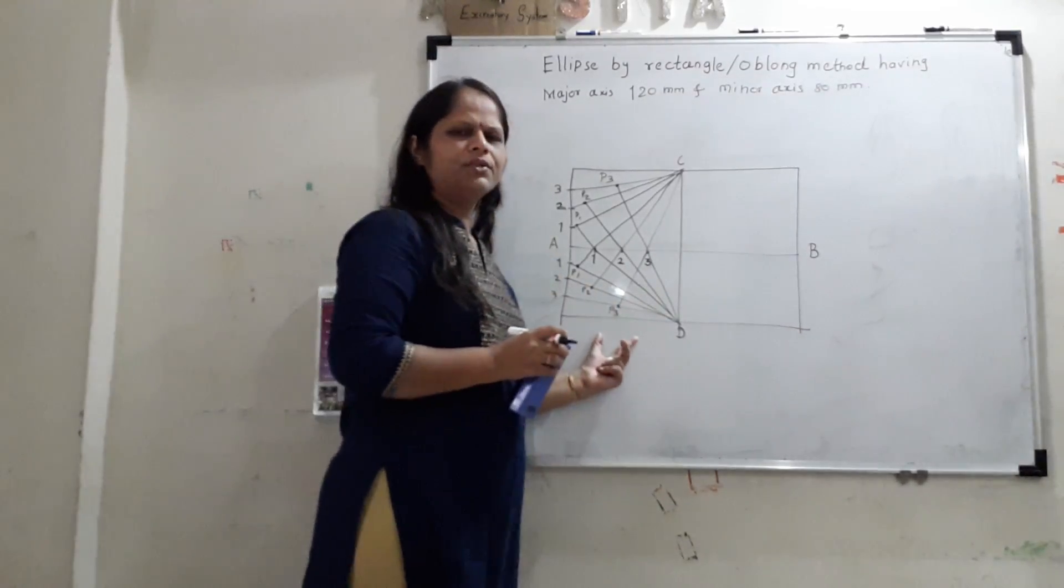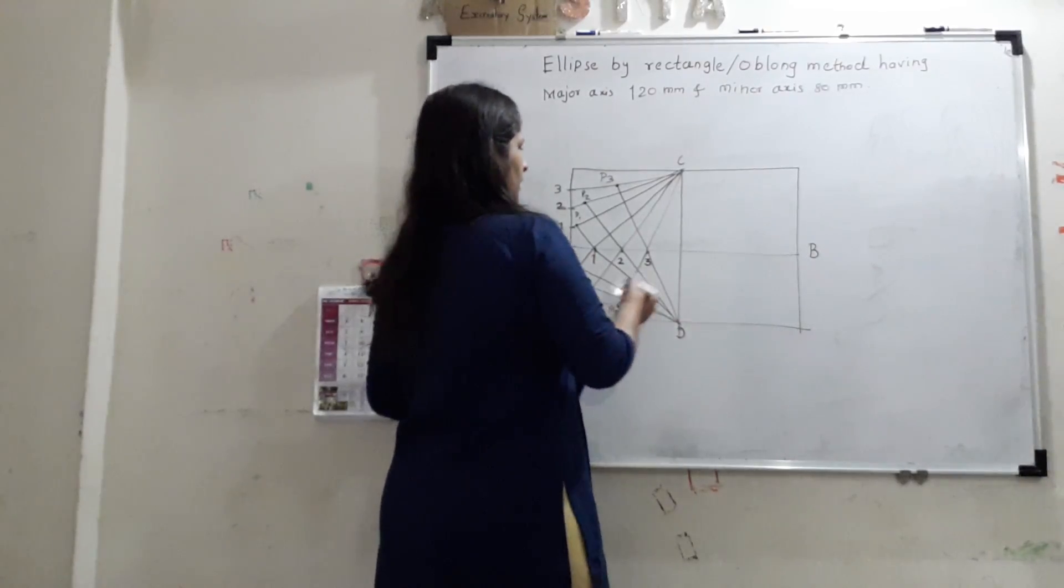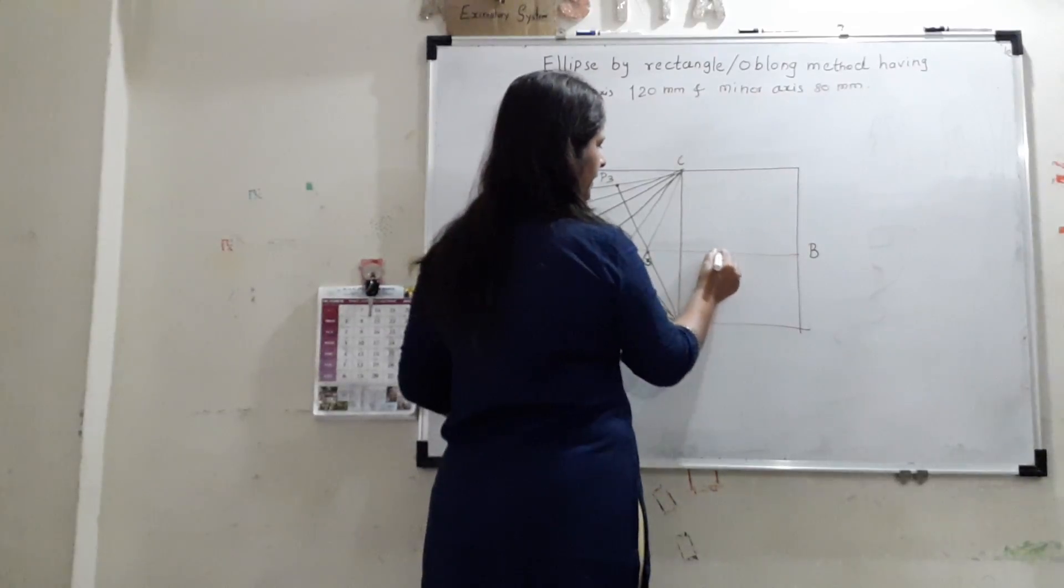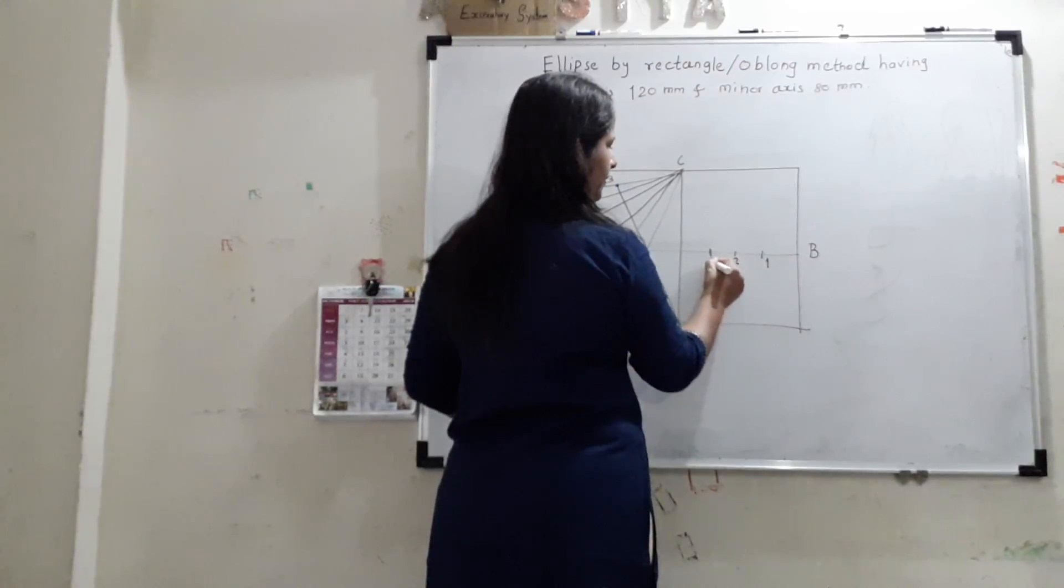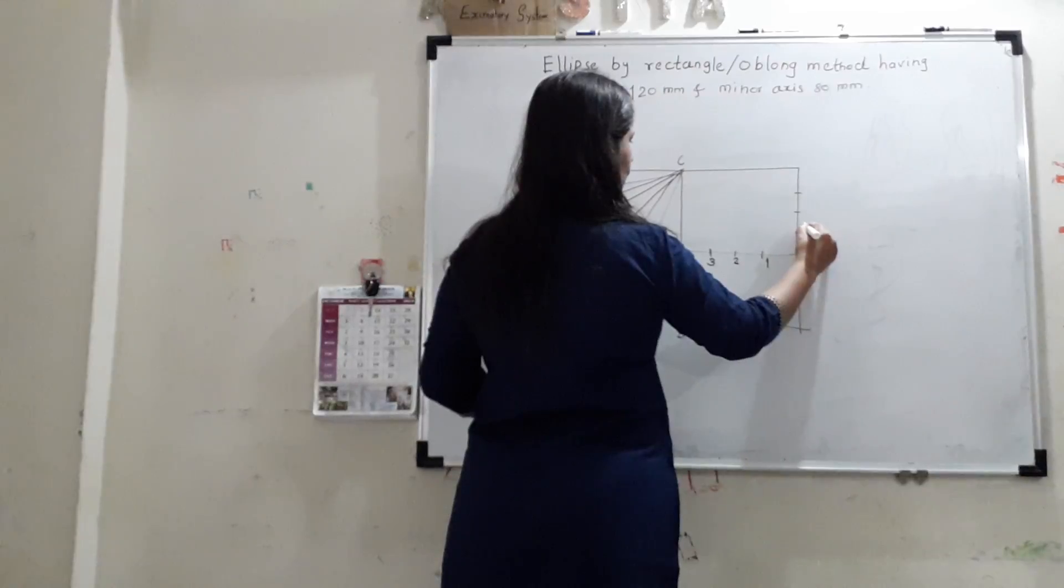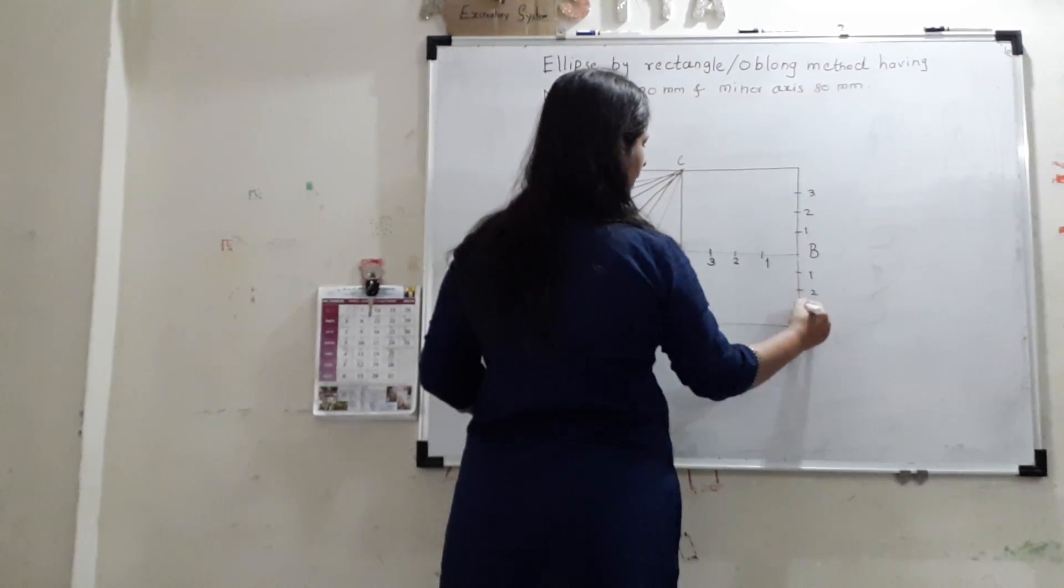Same construction you can do here. I will show that. So we will divide this again with the same distance. We will divide it in equal four divisions. So one point will be here. 1, 2, and 3. We will divide this also in equal four divisions. So 1, 2, and 3 here. And we will divide. 1, 2, and 3 here.